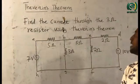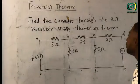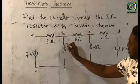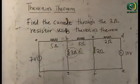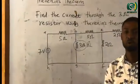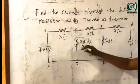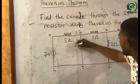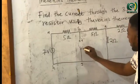We are supposed to use Thevenin's theorem to solve the circuit on the board. The question is: find the current flowing through the 3-ohm resistor using Thevenin's theorem. The 3-ohm resistor becomes our load resistor. Following the first procedure, we remove the load resistor from the circuit and mark the terminals A and B.